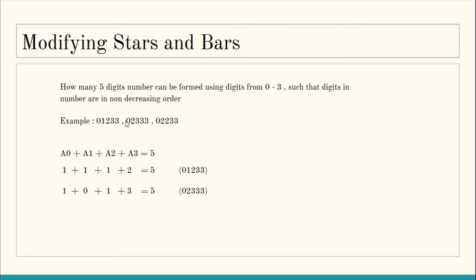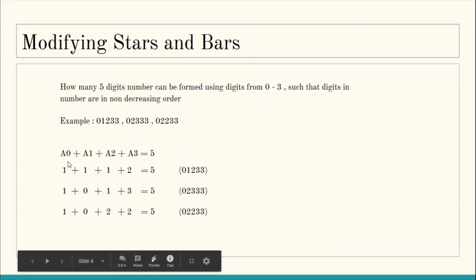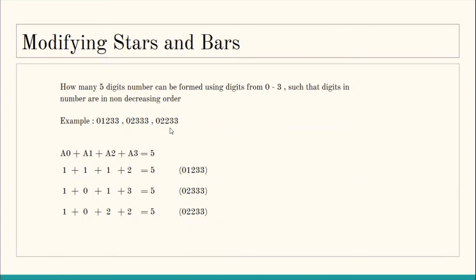For a second example number: since 0 appears once, a0=1; since 2 appears once, a2=1; since 1 does not appear at all, a1=0; and since 3 appears three times, a3=3. The sum of all these is five, forming a valid number. Similarly for the last example. So we see we can represent each such number using this equation.